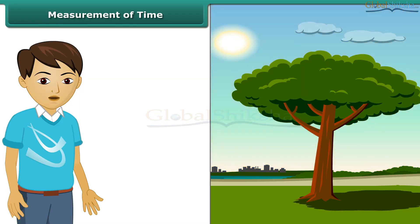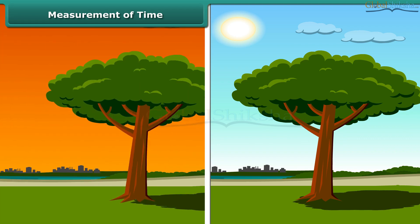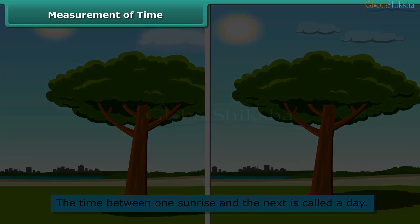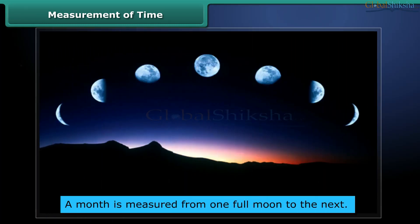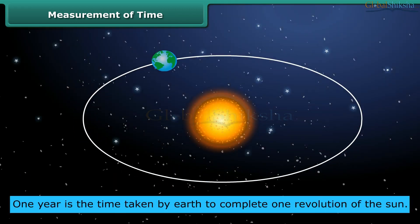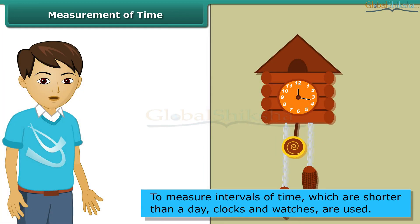Have you ever wondered how our elders could tell the approximate time of the day by just looking at the shadows? Many events in nature repeat themselves after definite intervals of time. For example, sun rises every day in the morning. The time between one sunrise and the next is called a day. Similarly, a month is measured from one full moon to the next. One year is the time taken by earth to complete one revolution of the sun.